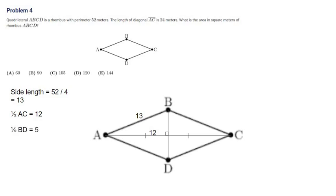So therefore, half of BD is 5. Therefore, the whole length of BD is 10. And all we need to do is multiply 24 times 10 divided by 2, which will give us 120. The answer is B.